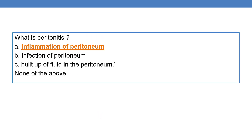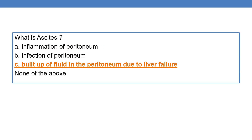What is peritonitis? 'Itis' means inflammation, so peritonitis is the inflammation of the peritoneum. What is ascites? Ascites is the buildup of excessive fluid in the peritoneum due to liver failure.